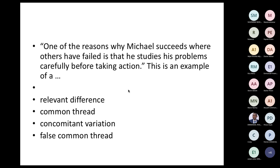Exercise: One of the reasons Michael succeeds where others have failed is that he studies his problems carefully before taking action. Is this relevant difference, common thread, concomitant variation, or false common thread? Michael succeeds where others fail — that points to a difference. And he does something others don't do: he studies his problems carefully. That difference is relevant in explaining why he succeeds where others have failed. The answer is relevant difference.